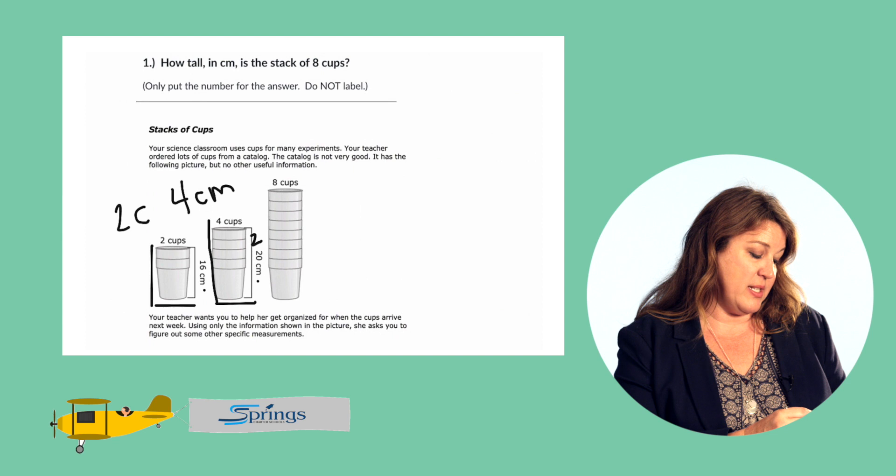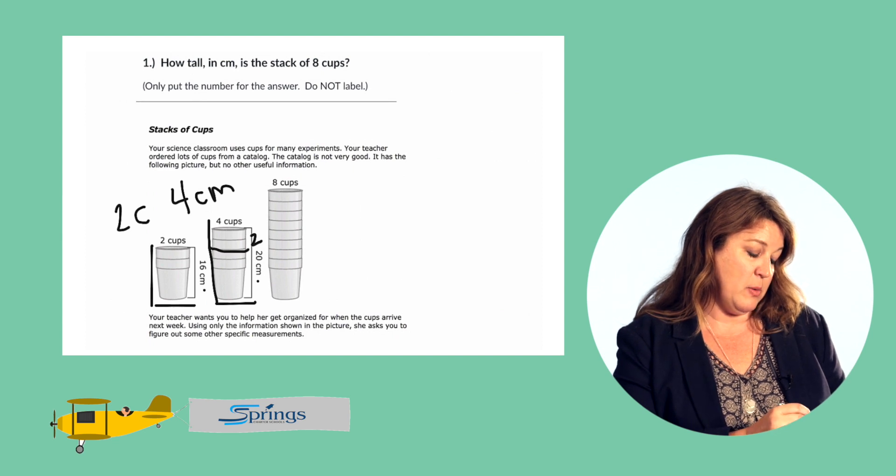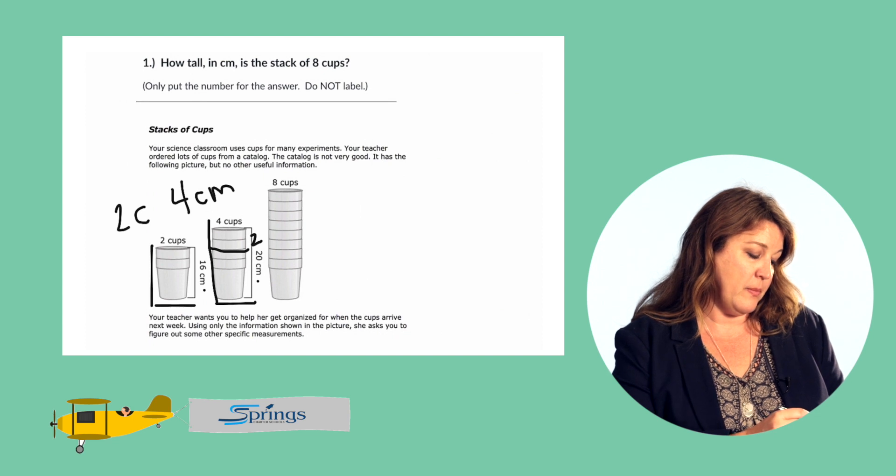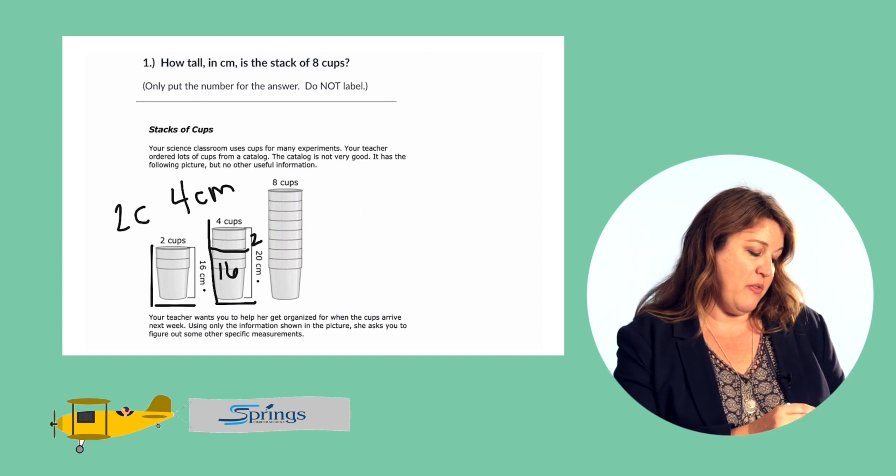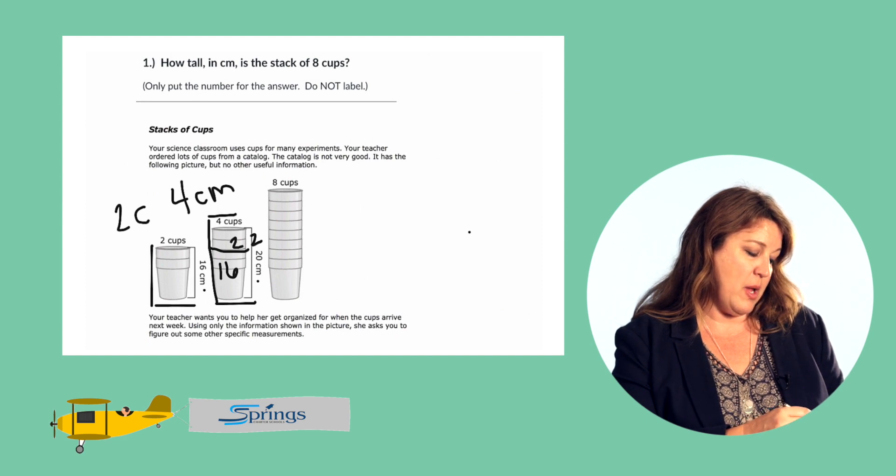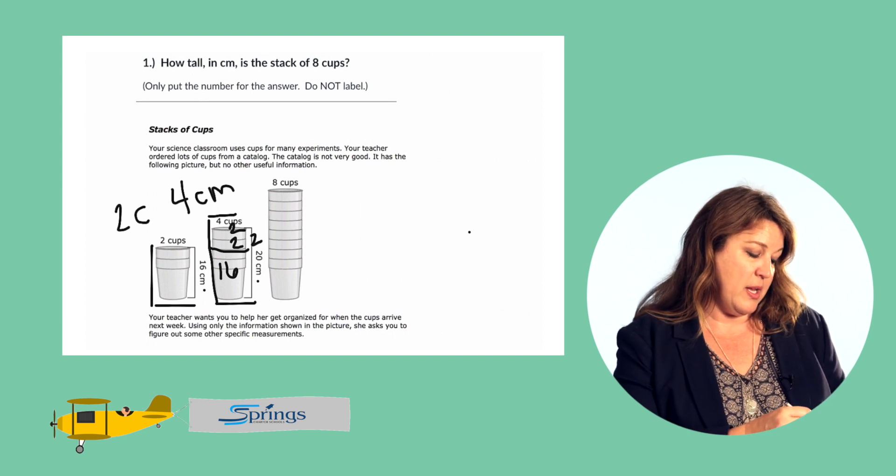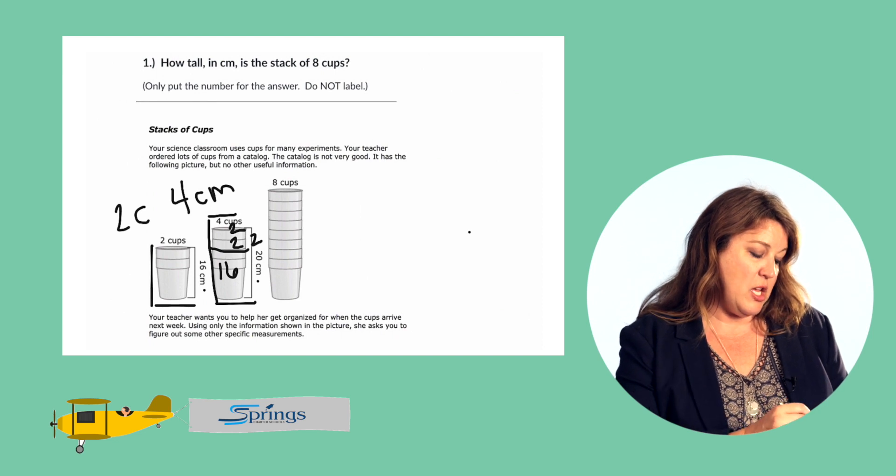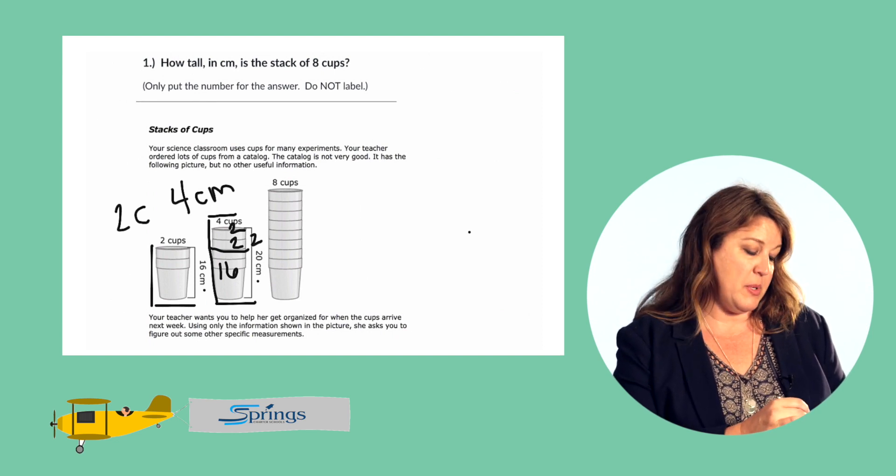So again, a stack of two cups is equal to 16 centimeters. This stack of four cups is equal to 20 centimeters. So we have two here and we have two here. 16 plus two plus two plus another two is 20 centimeters. So we know that each lip of this cup is equal to two.